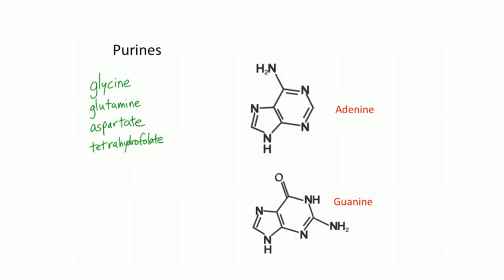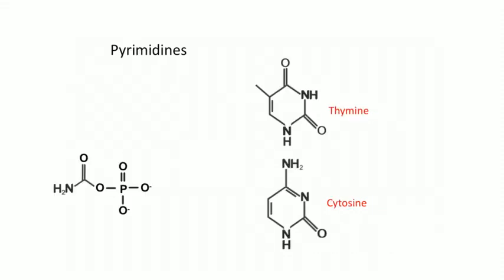Tetrahydrofolate is one reason you need folic acid to synthesize DNA. The carbon sources for purines are CO2, glycine, and tetrahydrofolate. Combined with glutamine and aspartate (which contribute nitrogen), that's a total of five substances needed to make a purine. You don't need to know which substance contributes which specific carbon or nitrogen, but know those five substances.